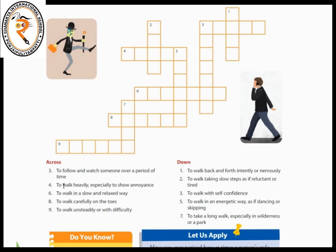The second clue — to walk heavily especially to show annoyance — the fourth word is S-T-O-M-P, stomp. The way you walk, you have to find the word. To walk in a slow and relaxed way — the sixth one is a 7-letter word: S-A-U-N-T-E-R, saunter. I hope you will find the remaining words with the help of a dictionary.